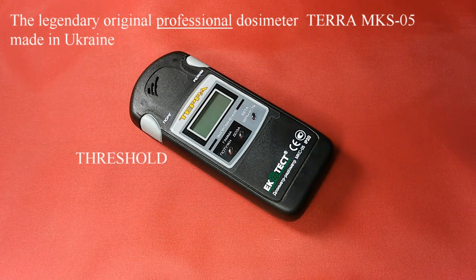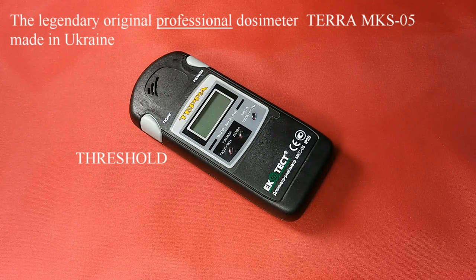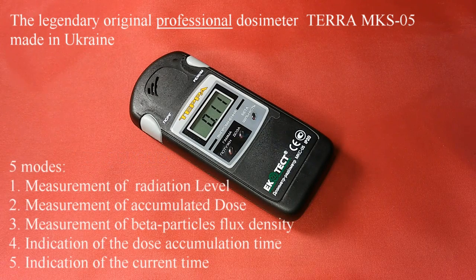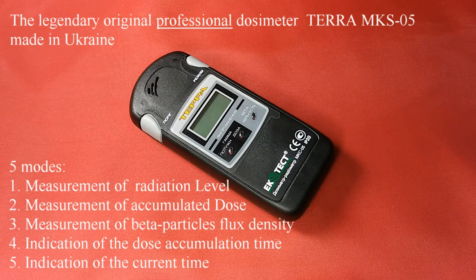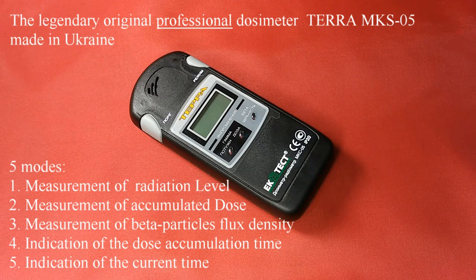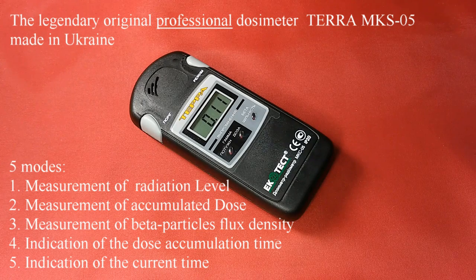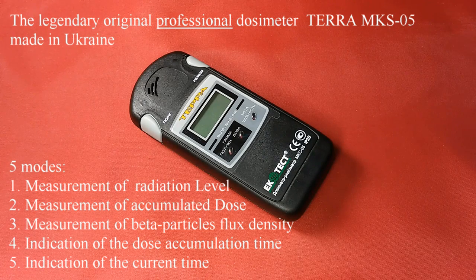The dosimeter has five modes. The first one shows the current radiation level. The second one shows the operator's accumulation dose. The third one shows surface beta particles flux density. The fourth one shows the operator's accumulation time. The fifth one shows the real time.